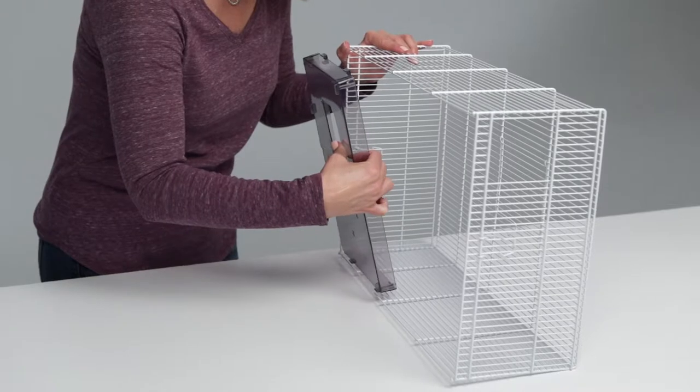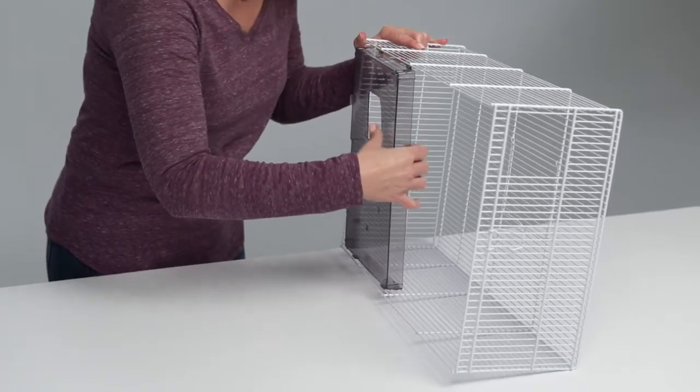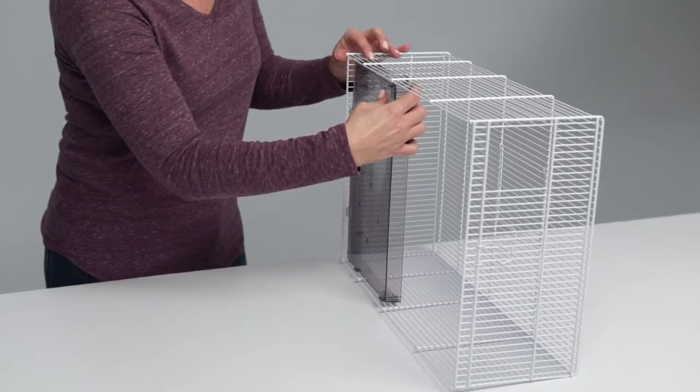Turn the wire top on its side and hook the elevated feeding tray from the inside, placing the hooks on the fourth horizontal wire from the bottom.